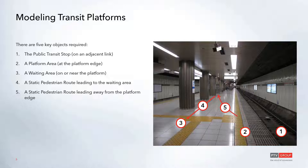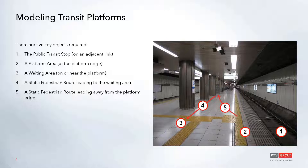The key objects for creating a platform are: the public transit stop on an adjacent link; a platform area — the edge of the platform where people board or alight; the waiting area on the platform where people stand waiting for the vehicle; and two sets of routes — routes leading in from external areas to the waiting area, and a static route leading away from the platform edge for alighting passengers.